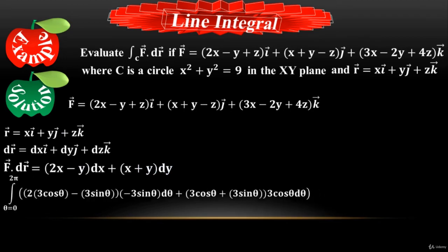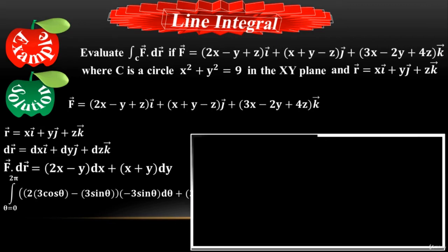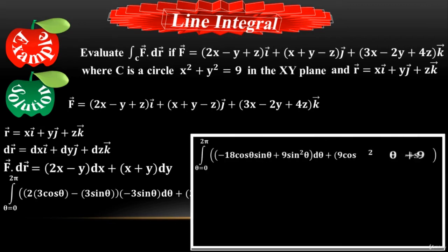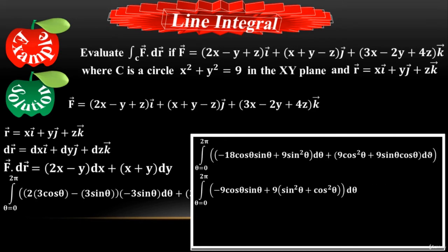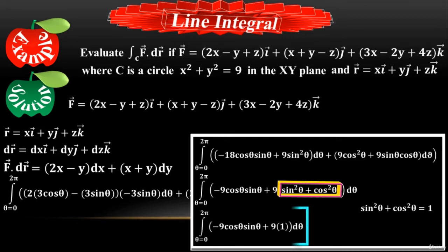Now simplify the equation from 0 to 2π, expanding to get −3cosθ·sinθ + 9(sin²θ + cos²θ) dθ. Using the trigonometric identity sin²θ + cos²θ = 1 — a basic formula you must remember — substitute 1 to get (−cosθ·sinθ + 9) dθ.